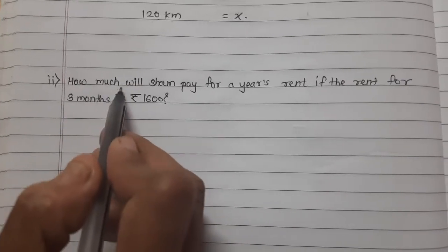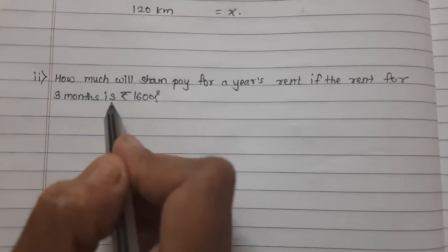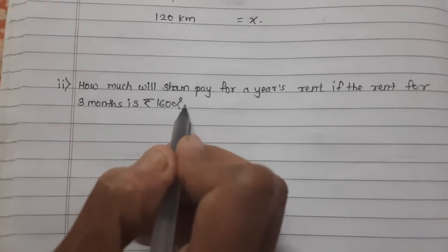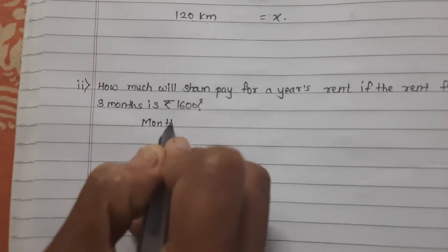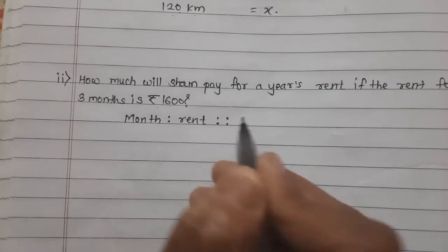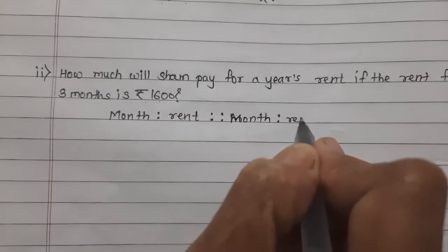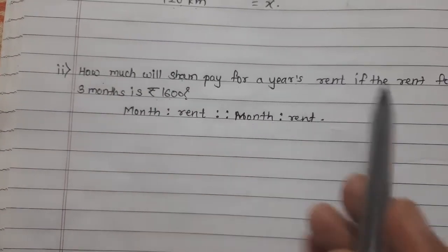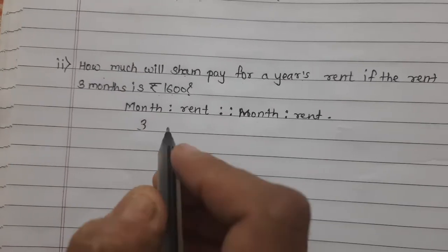Let's solve the next example. How much will Shyam pay for a year's rent if the rent for 3 months is Rs. 1600? We set up: month is to rent, proportion month is to rent. Rent for 3 months is Rs. 1600, so we write 3 months and Rs. 1600.